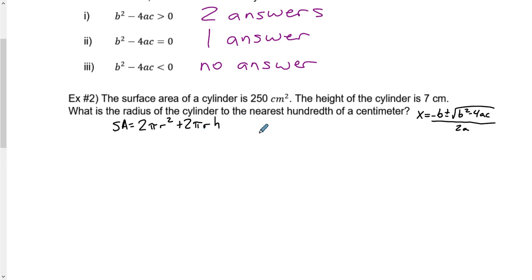The surface area of a cylinder is written as a formula 2πr² plus 2πrh. It goes back to grade 8. Now we have a few bits of information we can actually fill in. The surface area is 250.